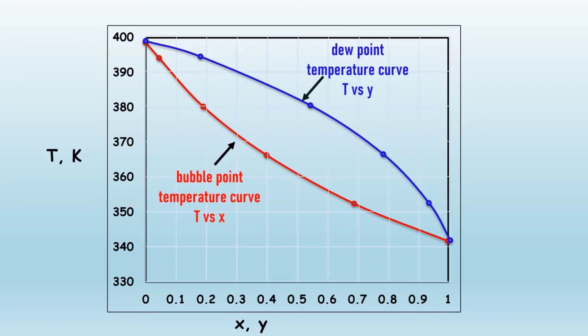Then on the ordinate through X equals 0 and Y equals 0, 398.6 Kelvin is the boiling point of octane. And on the ordinate through X equals 1 and Y equals 1, 341.7 is the boiling point of hexane.